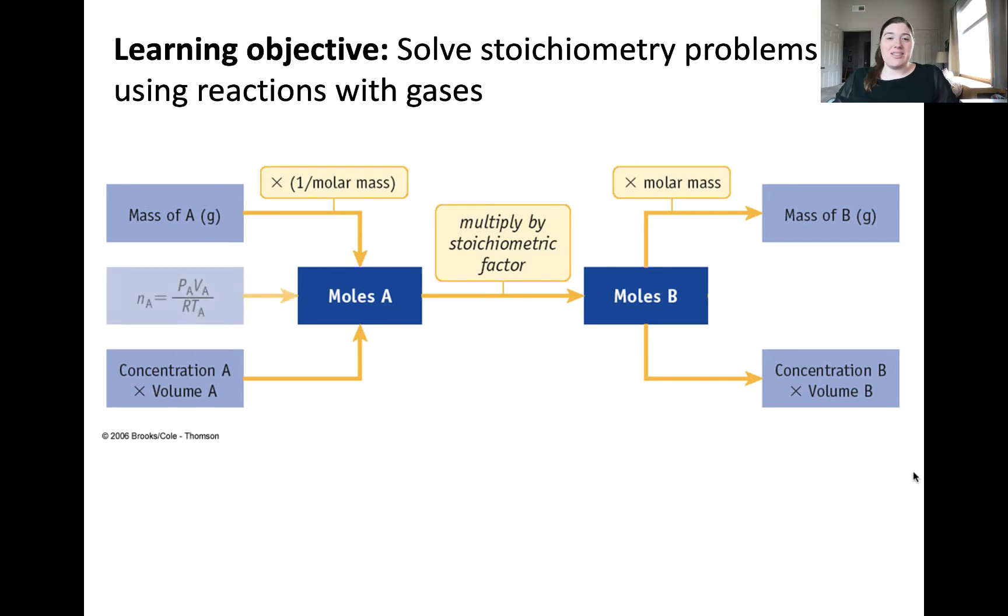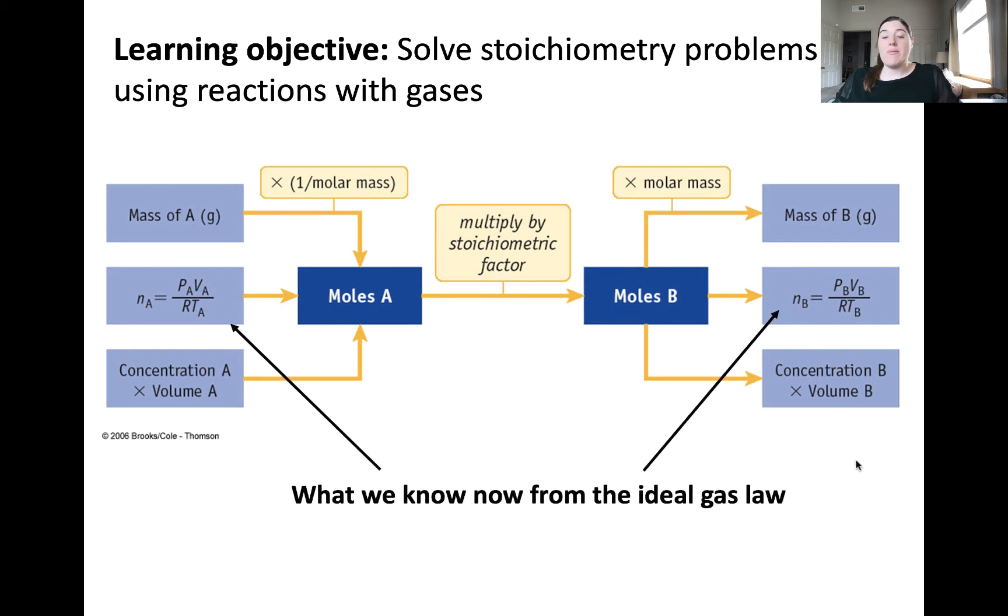This method is to use the ideal gas law to solve for moles of a gas phase species in terms of its pressure, the gas's pressure, volume, the ideal gas constant R, and the temperature. We can also solve for moles of our other species of interest in the same way. And both of these are again arising from the ideal gas law.